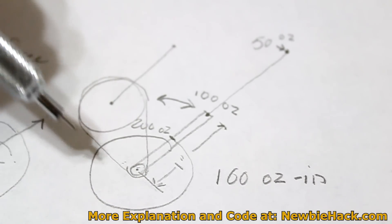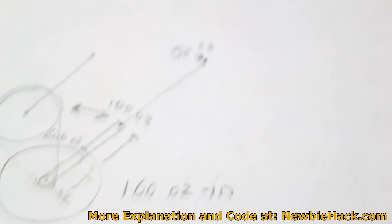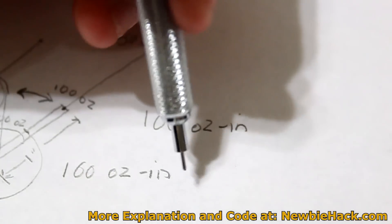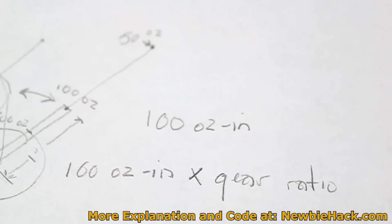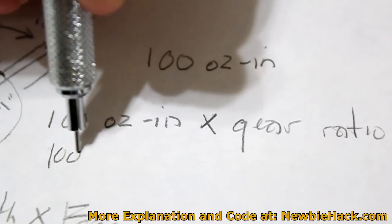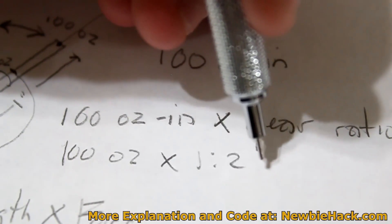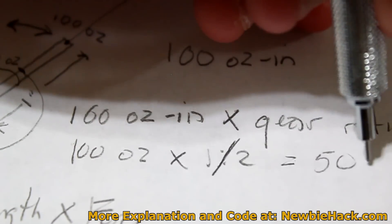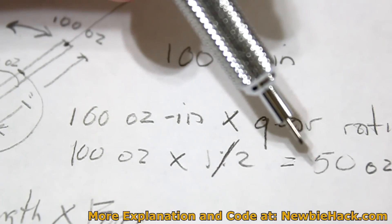And to understand how torque is affected by gear ratio, all you need to do is take your torque, let's say the 100 ounce inch, and multiply it by the gear ratio. Let's say if the gear ratio is 1 to 2, let's say 100 ounce times 1 to 2, which is the same thing as saying 1 over 2, that would equal 50 ounces, or 50 ounce inch. And that would be if you had a larger gear going towards a smaller gear.